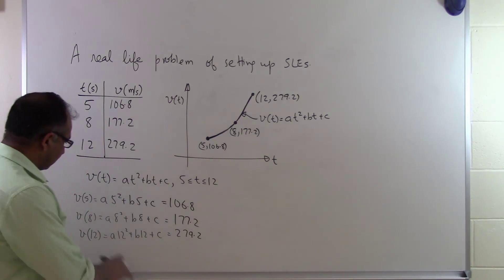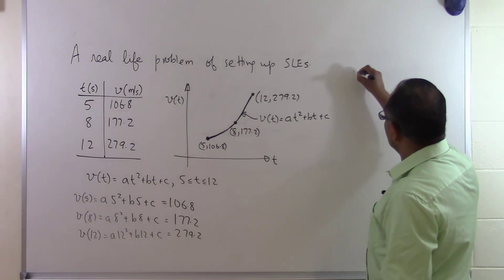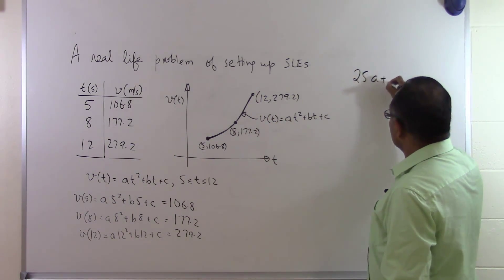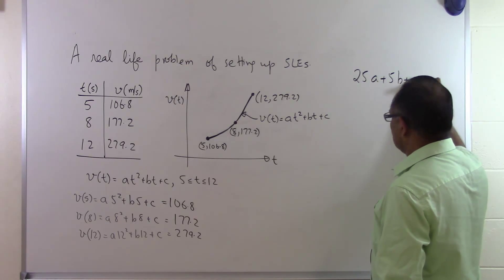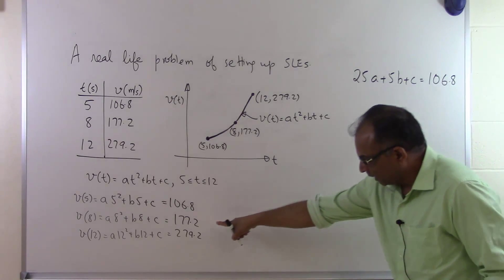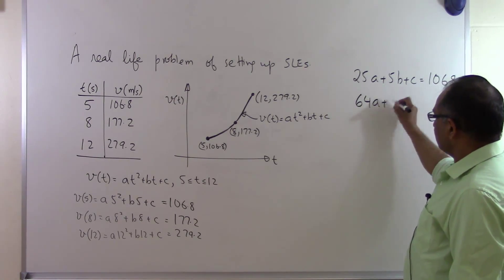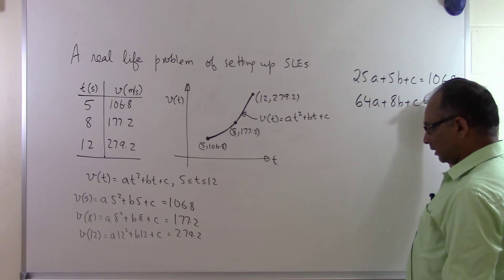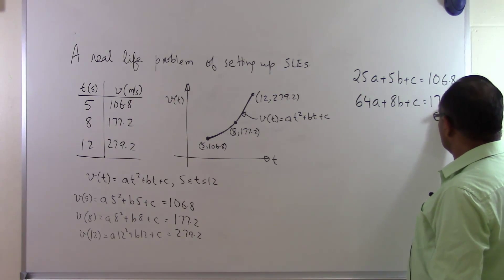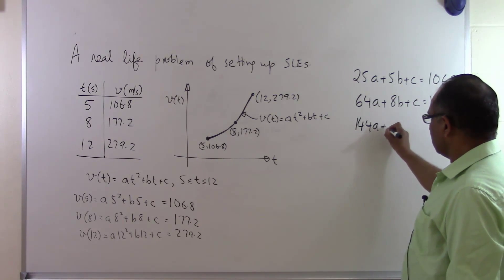Now if I make the simplification here, the first equation becomes 25a + 5b + c = 106.8. The second equation becomes 64a + 8b + c = 177.2. The third equation is 144a + 12b + c = 279.2.